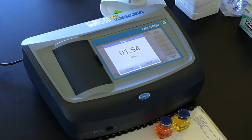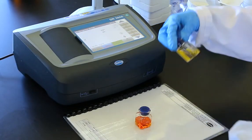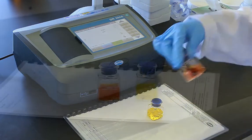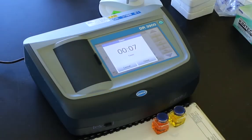Start a timer for two minutes of reaction time. While the timer is going, clean the outside of both cells. When the timer expires, align the blank cell into the instrument as indicated by your manufacturer.